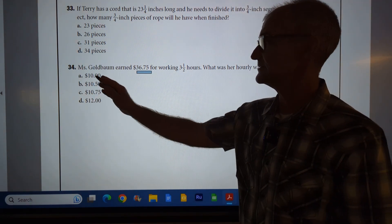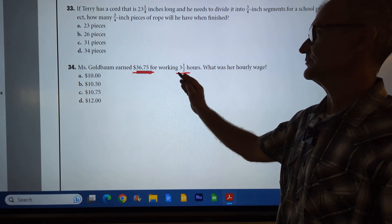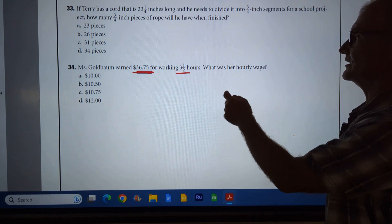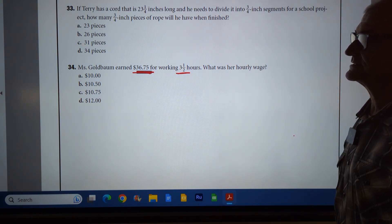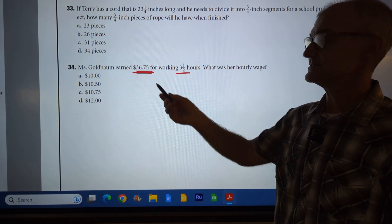Last problem right here, number 34. Ms. Goldbaum earned $36.75 for working three and a half hours. What was her hourly wage? So again, I'm expecting a value, you know, like a third of that or so.